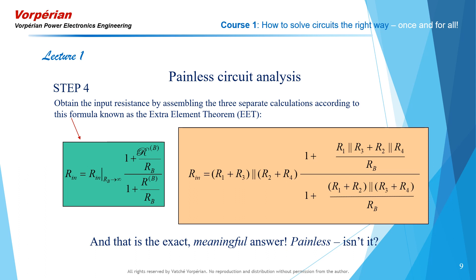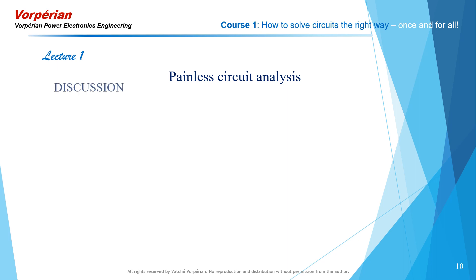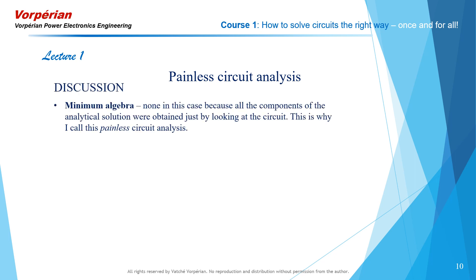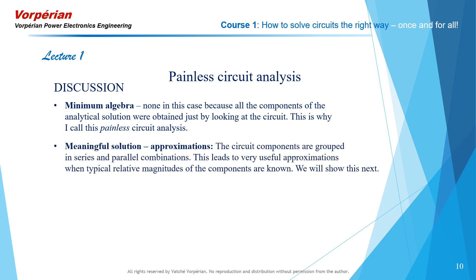Let's have a discussion on the answer and the method itself. This technique has minimum algebra — in this case there was barely any algebra done because all three separate calculations were performed just by inspection. The answer is meaningful because all the circuit elements are grouped together nicely in series-parallel combinations and as ratios compared to unity.